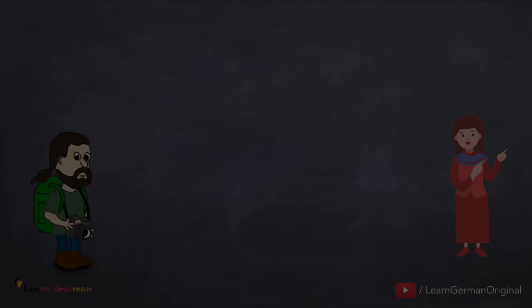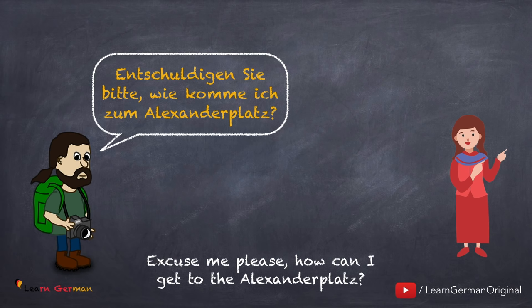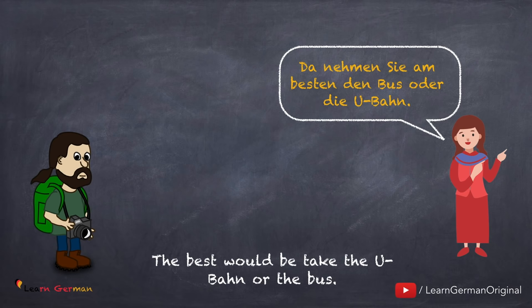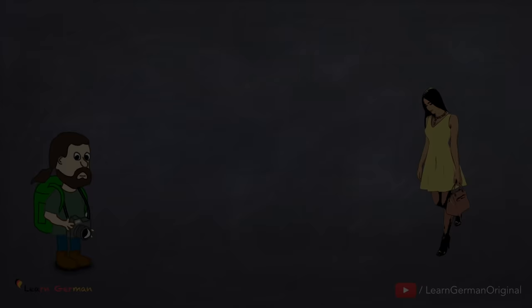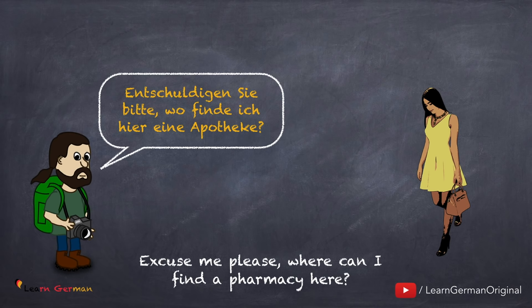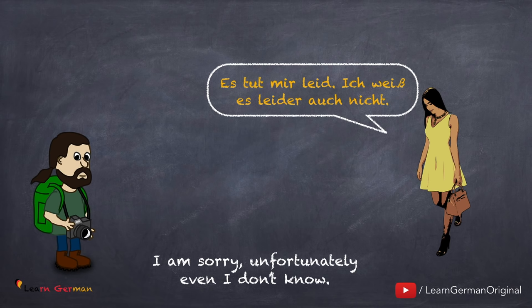Let's look at another conversation. 'Entschuldigen Sie bitte, wo finde ich hier eine Apotheke?' and 'Wie komme ich zum Alexanderplatz?' The answer: 'Da nehmen Sie am besten den Bus oder die U-Bahn.' And if by chance you don't know the way, you can say: 'Es tut mir leid, ich weiß es leider auch nicht.'